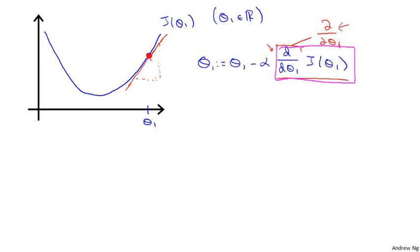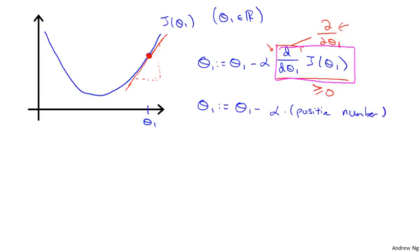This line has a positive slope, so it has a positive derivative. My update to theta will be theta one updated as theta one minus alpha times some positive number. Since alpha, the learning rate, is always a positive number, I end up decreasing theta one — moving it to the left. We can see this is the right thing to do, because I want to head toward the minimum over there. So gradient descent seems to be doing the right thing.